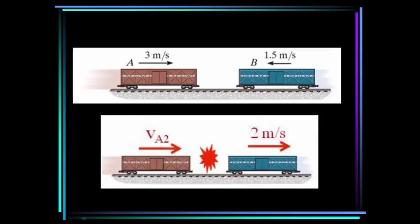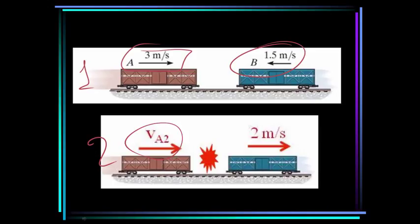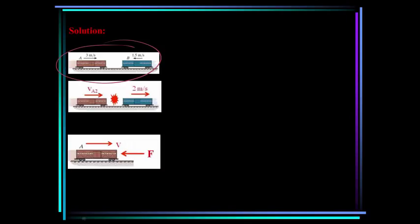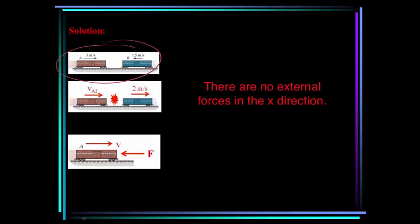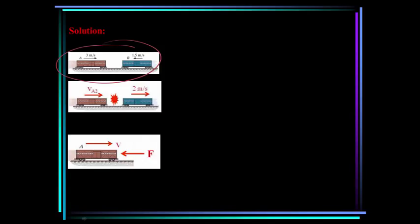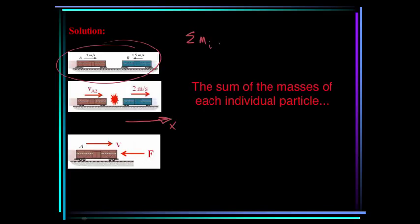Here's a visual of what's happening. State 1: A is moving right at 3 m/s, B is moving left at 1.5 m/s. State 2 (after collision): we're looking for the velocity of A, and we're told the velocity of B is 2 m/s to the right. Treating both cars as a system, there are no external forces, so there is no external impulse, and we apply conservation of linear momentum in the x-direction. I define x as positive to the right. The conservation equation is: sum of individual masses times velocity at state 1 equals sum of individual masses times velocity at state 2.